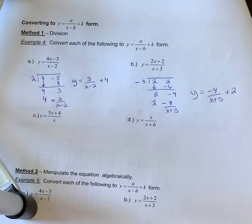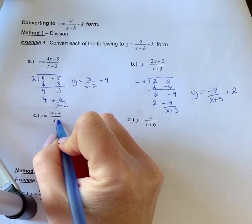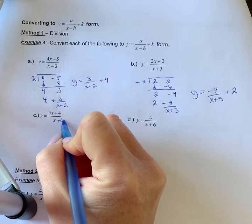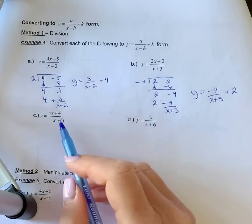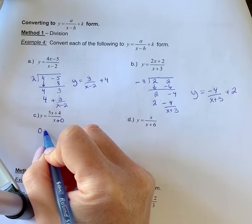Example 4, C. I just want to make sure if it looks a little different that this method still will work for you. So you need to think about this as a binomial. You can write it as x plus 0, which would mean that we're going to put 0 out here on our synthetic division.